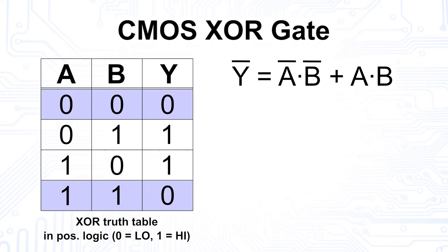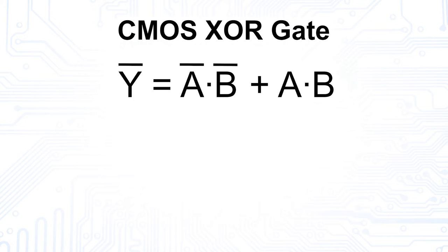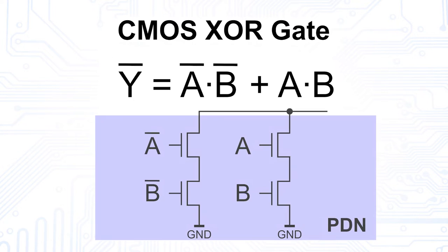Now, let's look at the pull-down network for this circuit. As before, the conjunction A and B is a serial connection. An OR connection, on the other hand, is a parallel connection of NMOS transistors. As a result, we get a serial connection of two NMOS, which is connected in parallel to another serial connection of two NMOS.